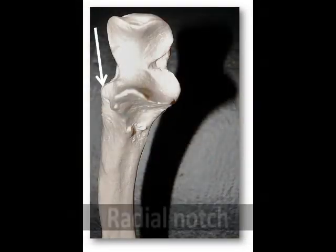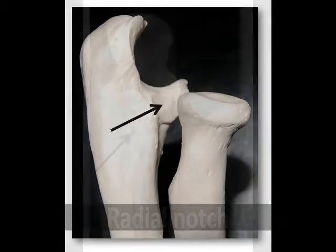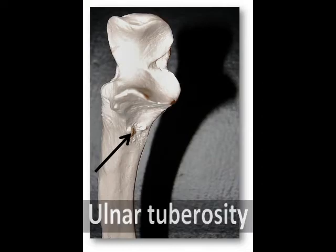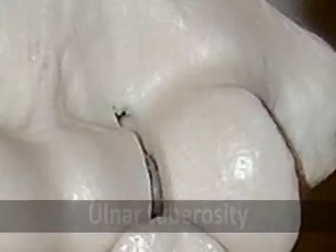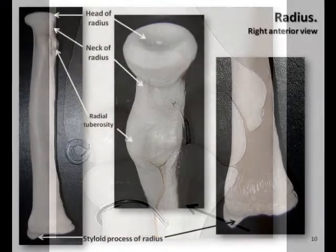Located just lateral and below the trochlear notch is the radial notch, which articulates with the head of the radius. There is a rough, bumpy area called the ulnar tuberosity located inferior to the coronoid process. It serves as an attachment point for the tendons of the biceps brachii muscle.